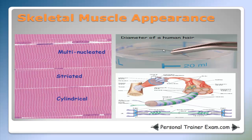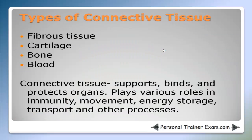Shortly I'm going to talk about the connective tissue found in skeletal muscle. But first, a brief review: connective tissue supports, binds, and protects organs. It plays various roles in immunity, movement, energy storage, transport, and other processes. The different types of connective tissue are fibrous tissue, cartilage, bone, and blood.